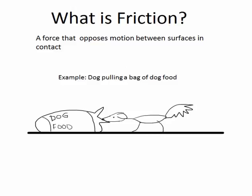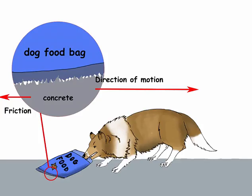We'll use a dog pulling a bag of food across a concrete floor as an example. So here is a better diagram of our dog. Let's first see why there is friction.